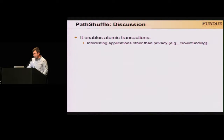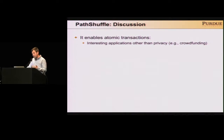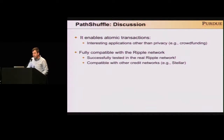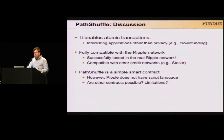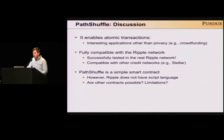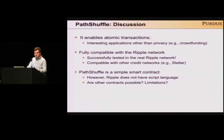PathSafo has interesting properties. First, it enables atomic transactions for the first time in Ripple, which has applications beyond privacy — for example, crowdfunding where either everybody contributes or nobody loses credit. PathSafo is fully compatible with the current Ripple network; we successfully tested one PathSafo transaction on the Ripple mainnet. It is also compatible with other emerging credit networks like Stellar. We also observe that PathSafo can be seen as a simple smart contract, even though Ripple doesn't yet allow a scripting language like Bitcoin.